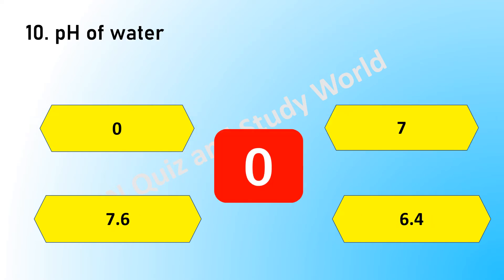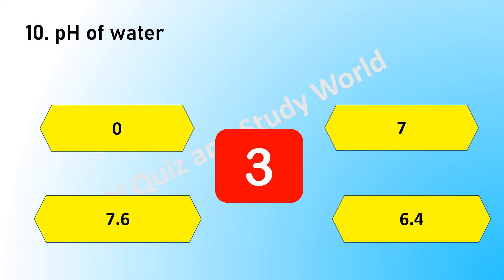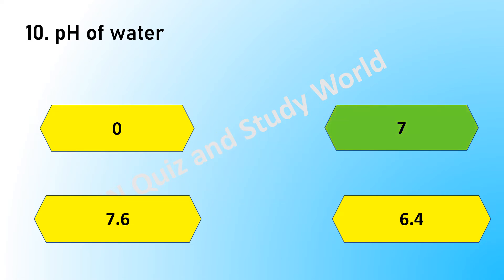The pH value of water is — is it 0, 7, 7.6, or 6.4? The answer is 7.